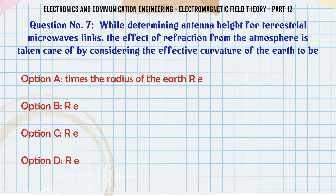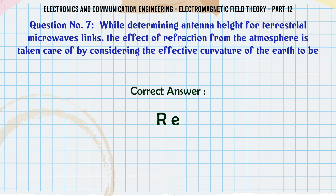While determining antenna height for terrestrial microwave links, the effect of refraction from the atmosphere is taken care of by considering the effective curvature of the earth to be: A. times the radius of the earth R_e, B. R_e, C. R_e, D. R_e. The correct answer is R_e.